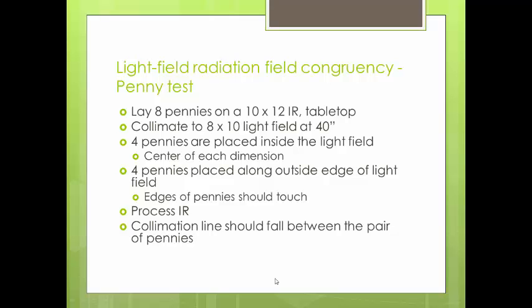This is extremely important to know because you don't want to be overexposing tissue. If your light field is smaller than your radiation field, you may be radiating tissue that unnecessarily needs to be radiated. Likewise, if your light field is larger than your radiation field, when you expose your image you may find that you have clipped anatomy — requiring a repeat image and still overexposing your patient.